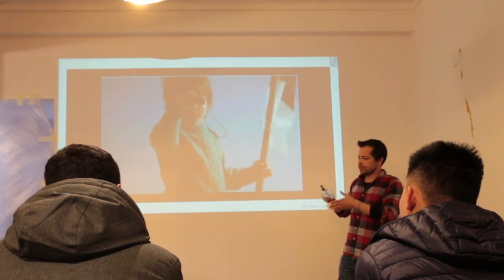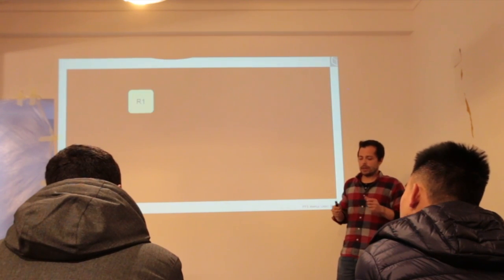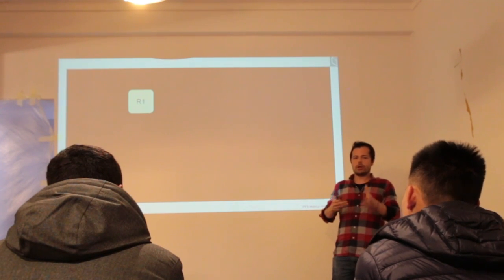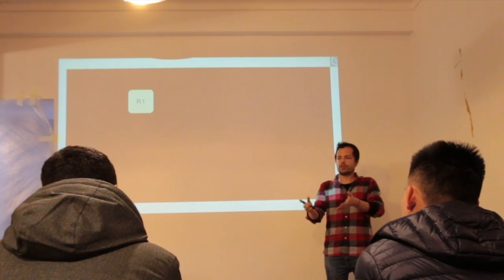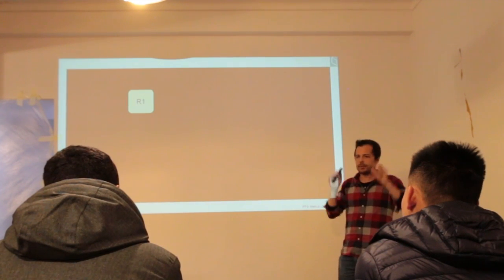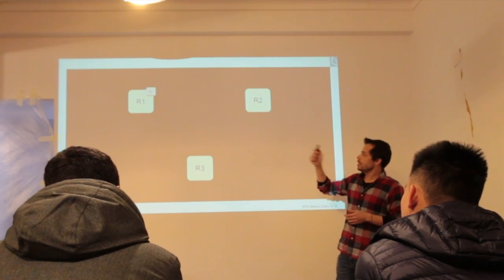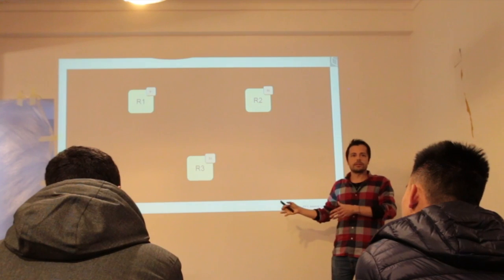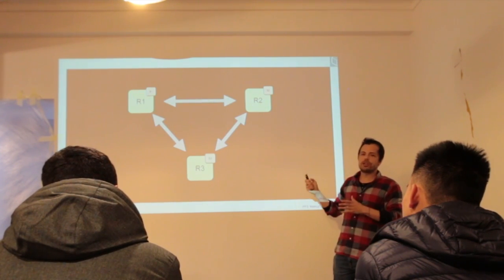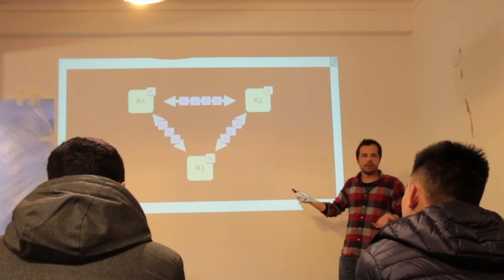Let's dive a bit more into the CRDT world. Each node holds a replica of the data. I have my document, you have your document, someone else has a document — we all have different replicas of the same dataset. Each replica has its own internal state, and they all communicate with each other using an asynchronous network to exchange messages.